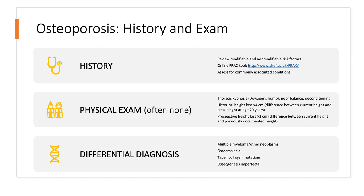Unless the patient has a fracture or obvious signs such as thoracic kyphosis, exaggerated cervical lordosis — a dowager's hump — poor balance, or a generally stooped-over appearance, it can be subtle. Two-thirds of vertebral compression fractures are not symptomatic and occur over time. We can suspect this if there is a historical height loss greater than four centimeters from peak height at age 20 to currently, or greater than two centimeters since the last visit.